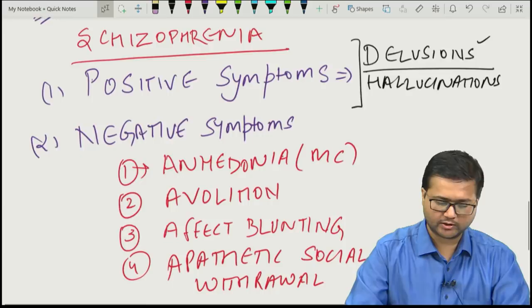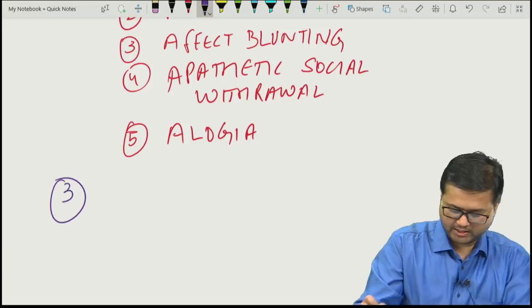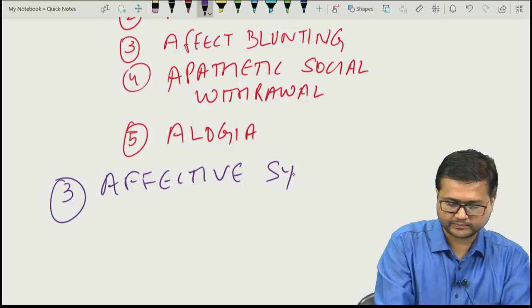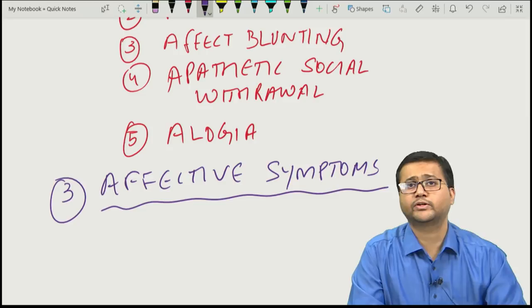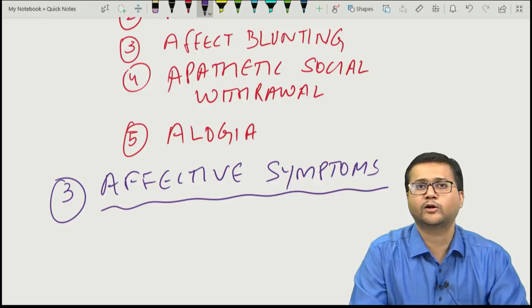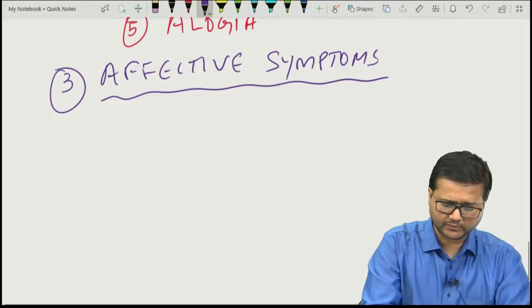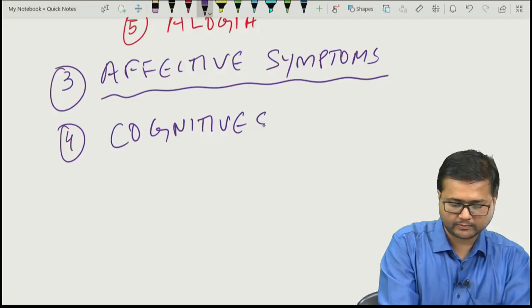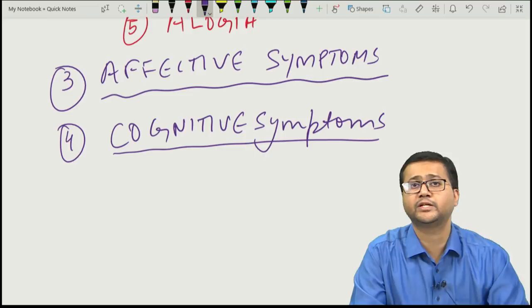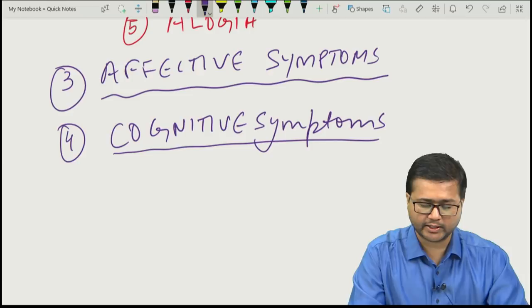Other domains described nowadays include affective symptoms — even mood symptoms like depression, mania, or hypomanic symptoms can be seen in schizophrenia, though they should not be dominantly present. Fourth is cognitive symptoms, including difficulty in learning, memory, abstract thinking, and speed of verbal processing.